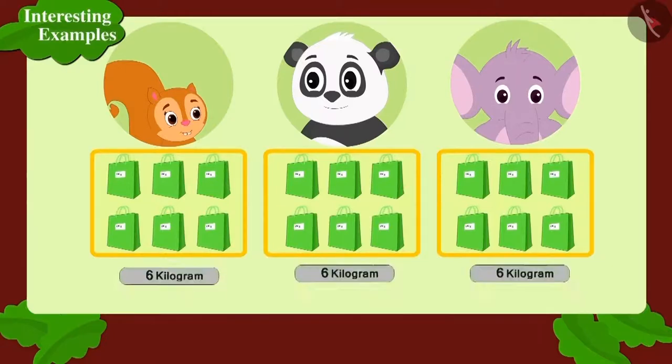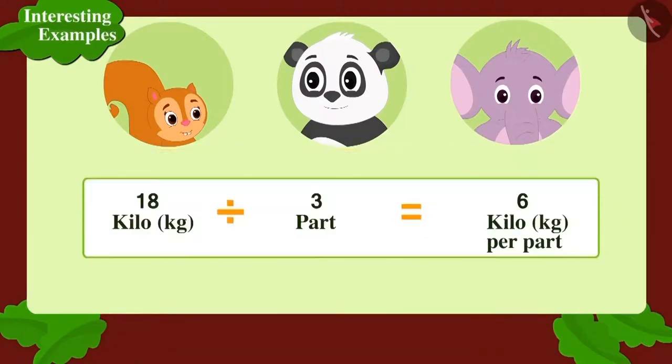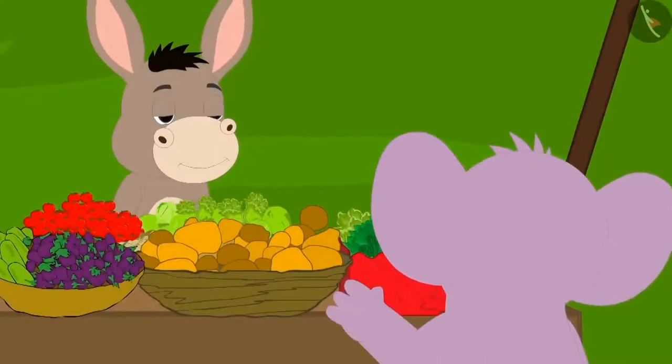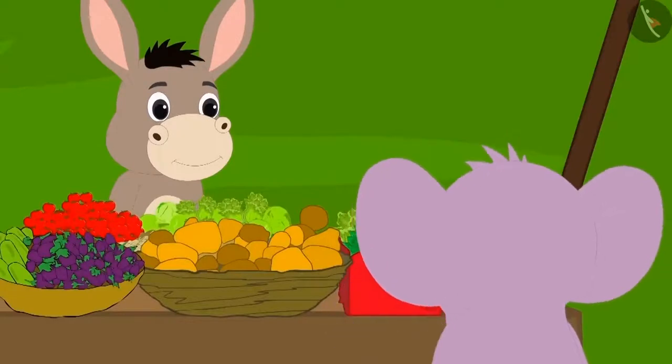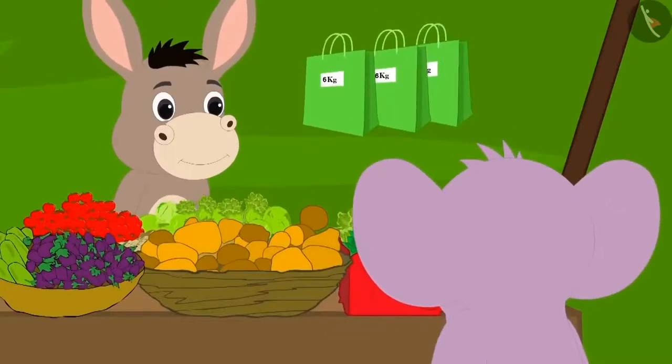Correct! Each part will have 6 kg. Appu will have to give 6 kg each of potatoes to Chanda and Golu. Appu asked Bola to divide the 18 kg potatoes into 3 bags of 6 kg each.